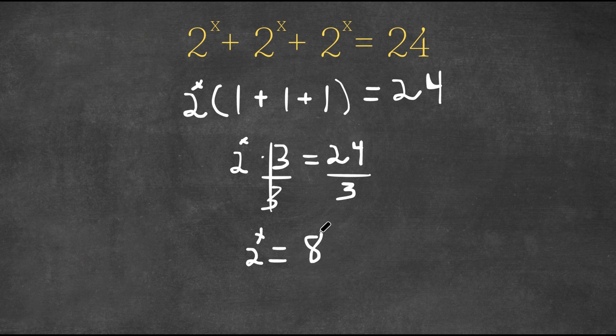So 8 we could actually write as 2 to the power of 3. So I'm going to rewrite 8 as 2 to the power of 3. So now we have 2 to the power of x is equal to 2 to the power of 3. And because these two bases here are the same, this also means that the exponents are the same as well, meaning that this is equal to this. So x is equal to 3.